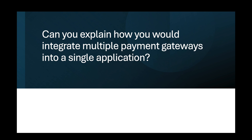When setting up the system, I configure each payment gateway with its respective API keys and credentials, securely managing these settings to prevent unauthorized access. The abstraction layer uses gateway-specific adapter classes to handle the unique requirements and API calls of each gateway. This allows the system to dynamically select the appropriate gateway based on factors such as user preference, transaction type, or geographic location. For example, a user in Europe might be routed to PayPal while a user in the United States might be processed through Stripe.